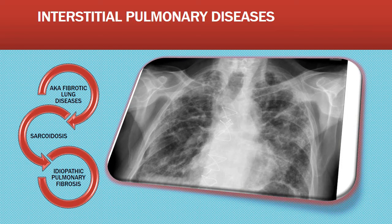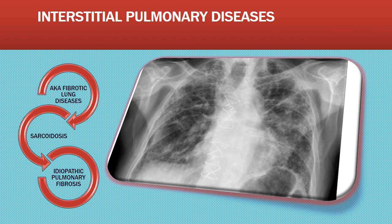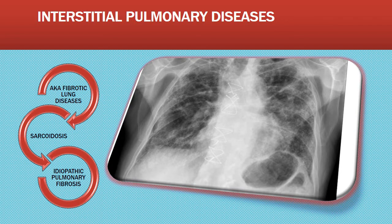Idiopathic pulmonary fibrosis is a common, highly lethal restrictive lung disease that typically affects patients with a history of cigarette smoking or chronic exposure to irritants. Most patients have progressive disease with few remission periods, and it often results in death in less than five years after diagnosis. The goal of therapy is to slow the progression of the fibrotic process and to manage the patient's dyspnea.